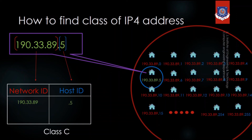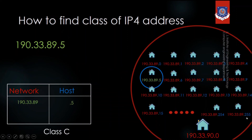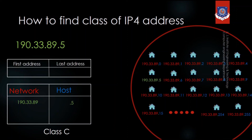Now, what if I want to add one more device to the network 190.33.89? To add one device we add one to the last IP address. If we add one to 190.33.89.255 we get 190.33.90.0 — the network ID has changed, which means you cannot add one more device to this network because this network is full. The first address of this network is 190.33.89.0 and the last address is 190.33.89.255.